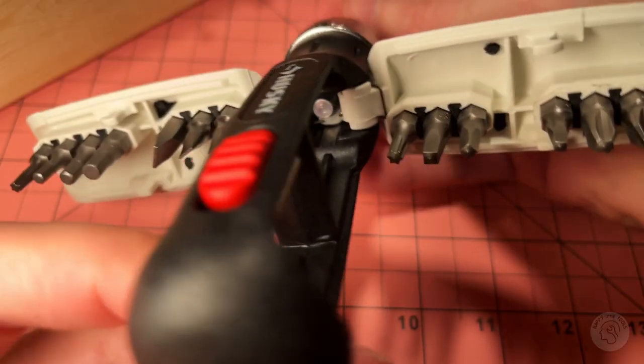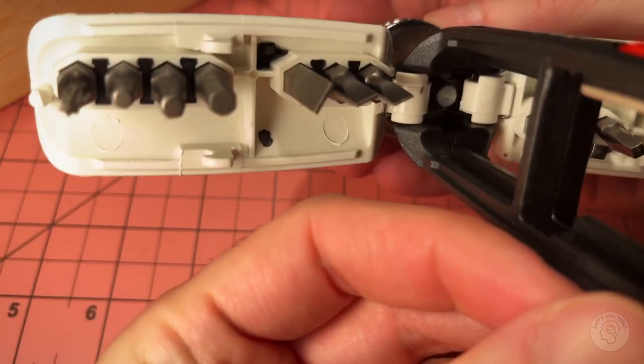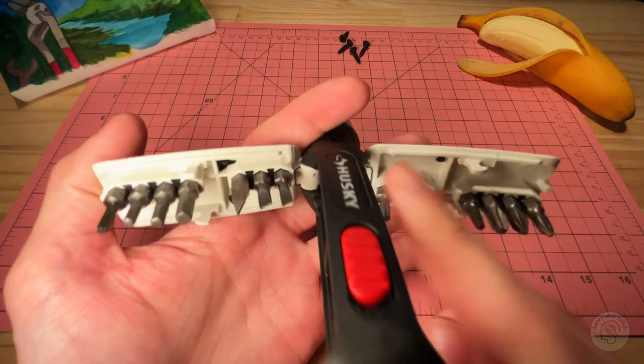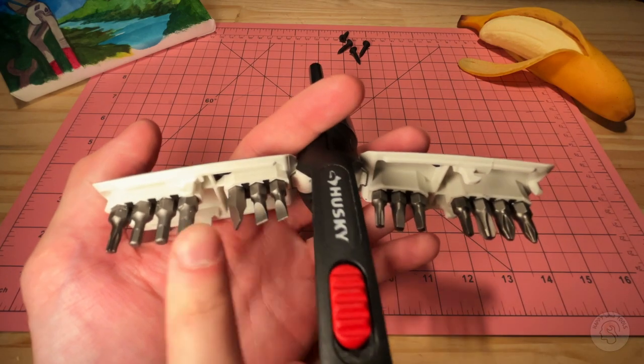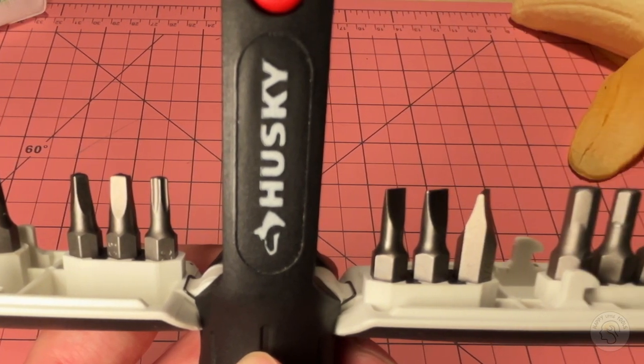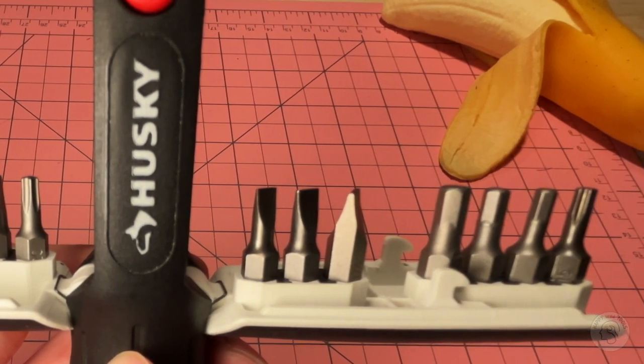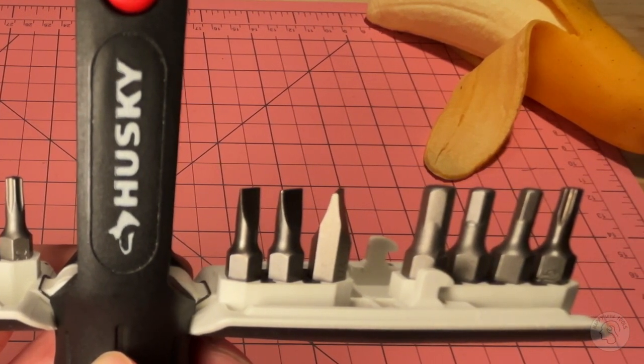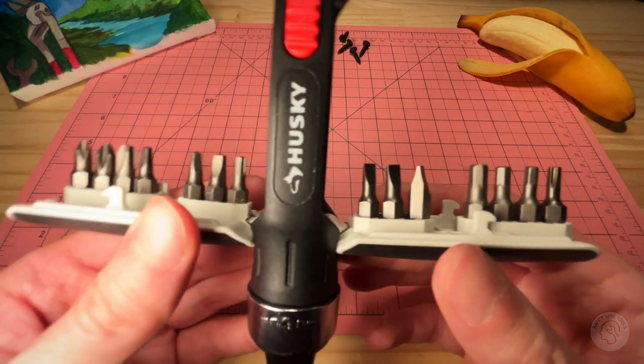And inside we can see that we have a total of 14 bits, seven on each side. These are the bits that come with it. Pretty good selection.